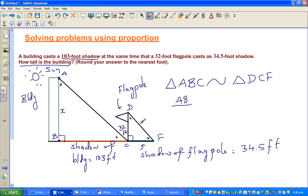Can I say AB over DC is equal to BC over CF? AB corresponds to DC and BC corresponds to CF. I can write AB as x over 32, equals 103 over 34.5.